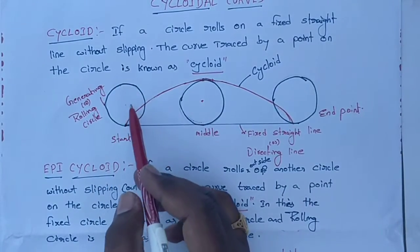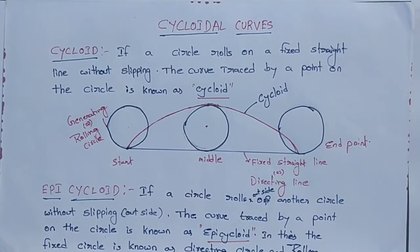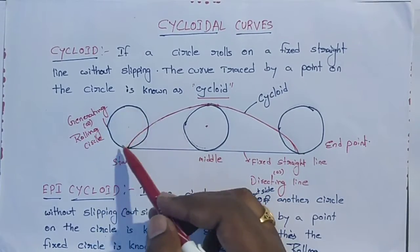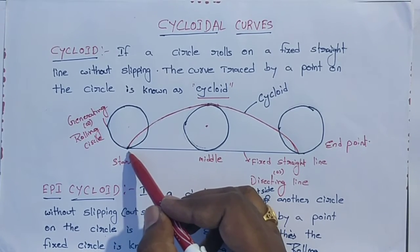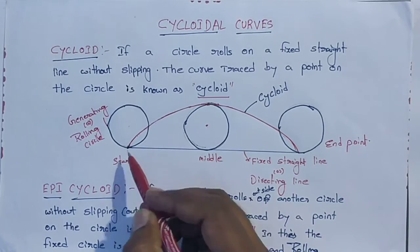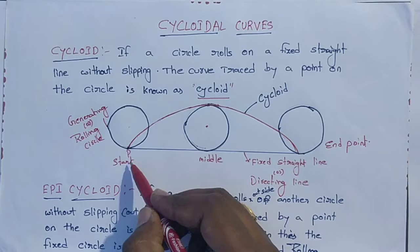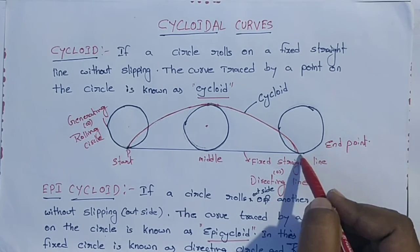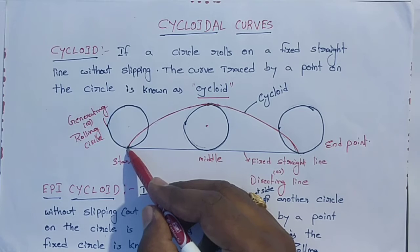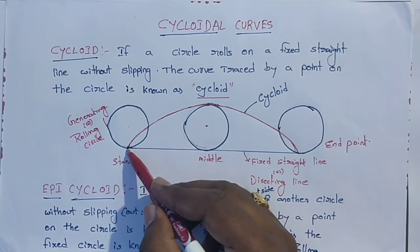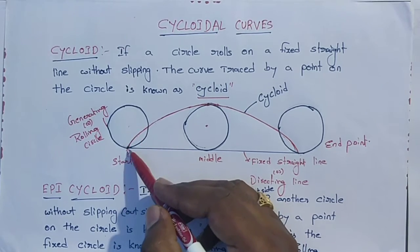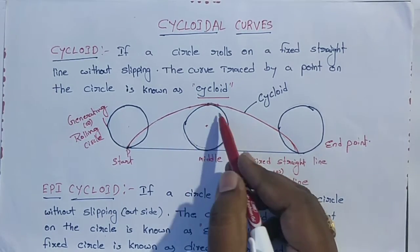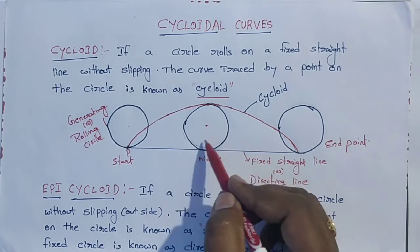Here I have drawn one example. It is a fixed straight line, and I have taken one circle — this is the rolling circle, also known as the generating circle. I have taken one point P on the circle. The circle starts at the starting position where point P is at the bottom, touching the straight line.